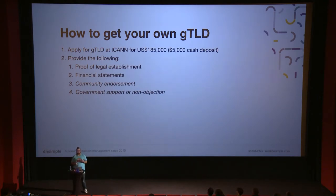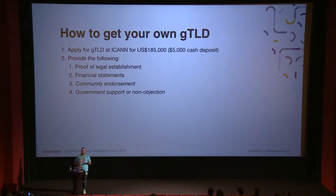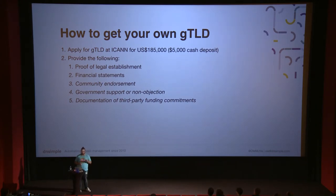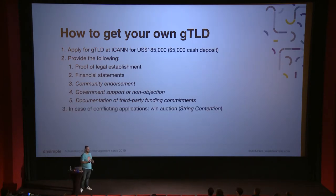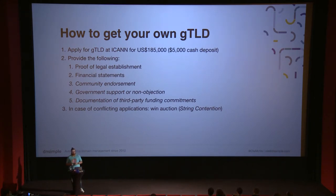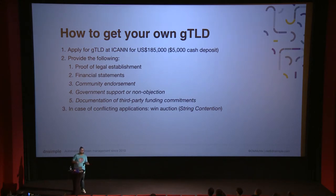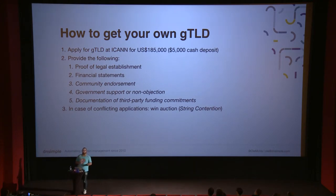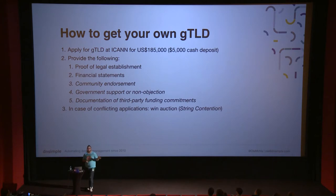If your TLD connects to a government — like .hamburg or .berlin — you need government approval or at least non-objection. If your financial statements suggest high traffic and operational costs, you must document third-party funding commitments. For high-tension domains like .app, multiple companies competed — Apple, Google, Amazon all wanted it. A process called string contention, basically an auction, was entered at ICANN. .app was sold for multiple billion US dollars, all going to ICANN — and if you competed and lost, you got a split of that amount because your application fee is non-refundable.